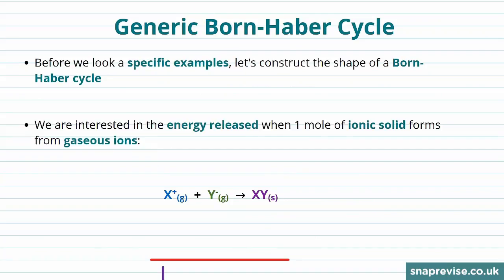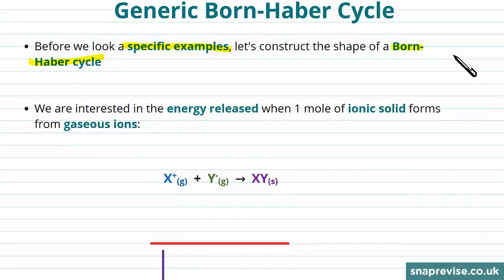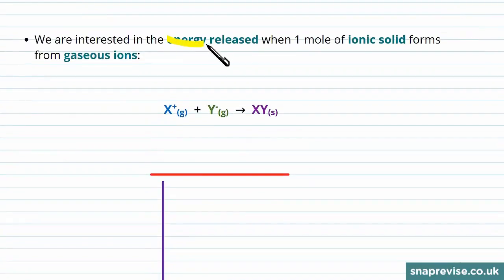Before we look at any specific examples of how to construct Born-Haber cycles for reactions, let's look at the generic shape of a Born-Haber cycle for any given reaction. So we're interested in the energy released when one mole of ionic solid forms from its gaseous ion.